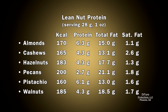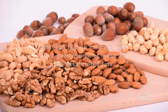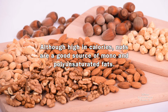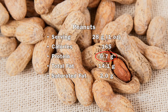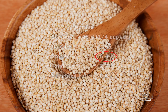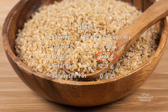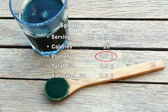Nuts are high in fat and calories, but low in saturated fat. Although high in calories, nuts are a good source of mono and polyunsaturated fats. Polyunsaturated fats are omega fatty acids. A one ounce serving of peanuts has about seven grams of protein. A quarter cup of quinoa has about six and a half grams of protein. One third cup of oats also has about six grams, and one tablespoon of spirulina, four grams.